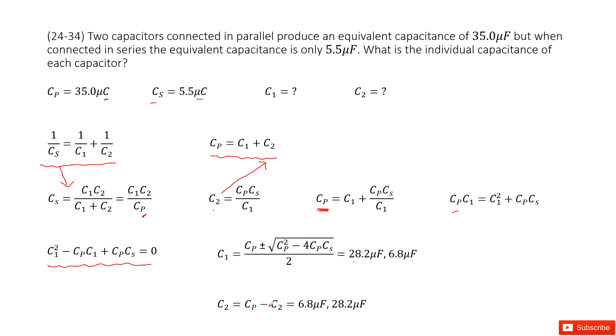And similarly, we can get C2 as Cp minus C1, right? And then get the also two corresponding values.